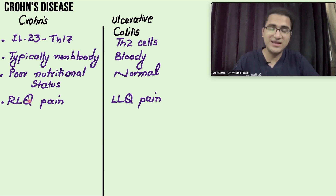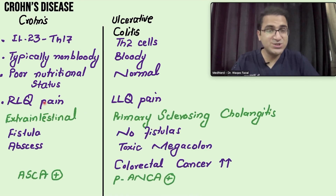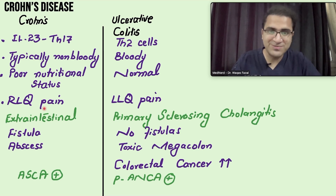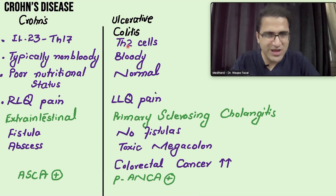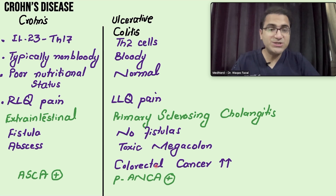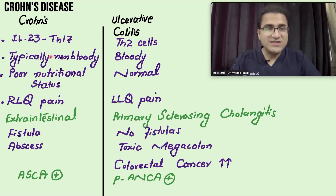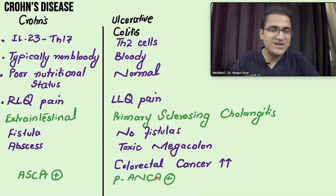Crohn's disease involves the ileum, causing right iliac fossa pain. Ulcerative colitis involves the rectum, causing left lower quadrant pain. Extra-intestinal manifestations of Crohn's disease include arthritis, uveitis, pyoderma gangrenosum, erythema nodosum, renal stones, and gallbladder stones. Ulcerative colitis is associated with primary sclerosing cholangitis — a high-yield point. Crohn's disease causes fistulas and abscesses; these do not happen in ulcerative colitis. Patients of Crohn's disease have anti-Saccharomyces antibodies positive, while ulcerative colitis patients are p-ANCA positive.